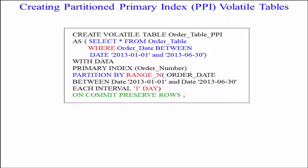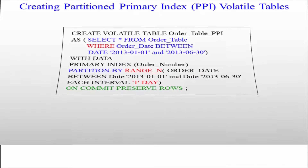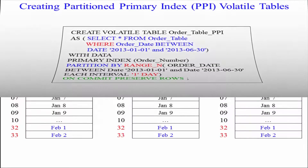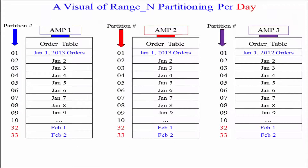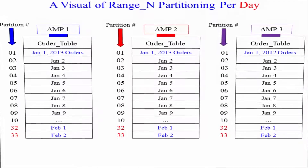I say the order date is between here and here, each interval one day. I now have a partitioned table — not sorted by row ID like normal, but sorted by row key, where each AMP sorts the data they own by the partition of order date. Each day is a separate partition.